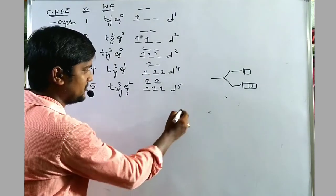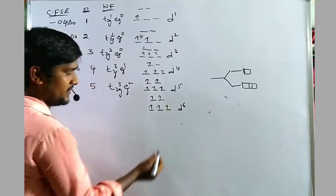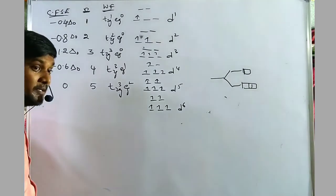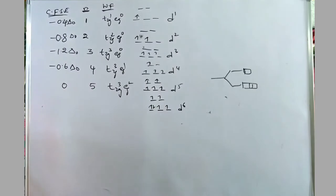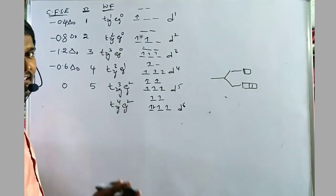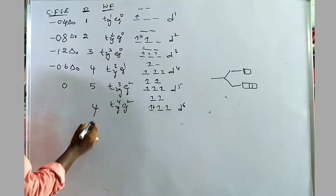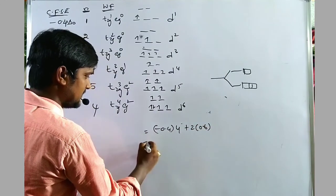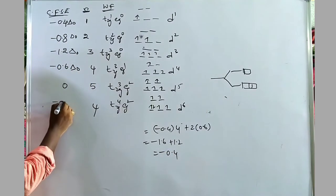For D6 in weak field, the 6th electron pairs up automatically without extra energy, giving configuration T2G⁴EG². Number of unpaired electrons = 4. CFSE = minus 0.4 × 4 + 0.6 × 2 = minus 1.6 + 1.2 = minus 0.4 ΔO. For D7 high spin: T2G⁵EG², 3 unpaired electrons, CFSE = minus 0.8 ΔO.